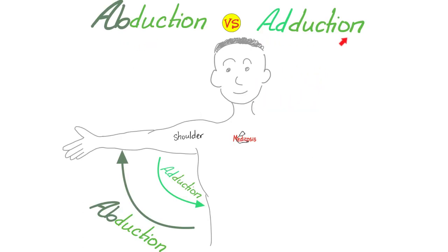Abduction is the movement which carries your extremity away from the median plane, away from the core of your body. Adduction is the exact opposite — it's the movement which carries your extremity closer to the median plane, towards the core of your body.